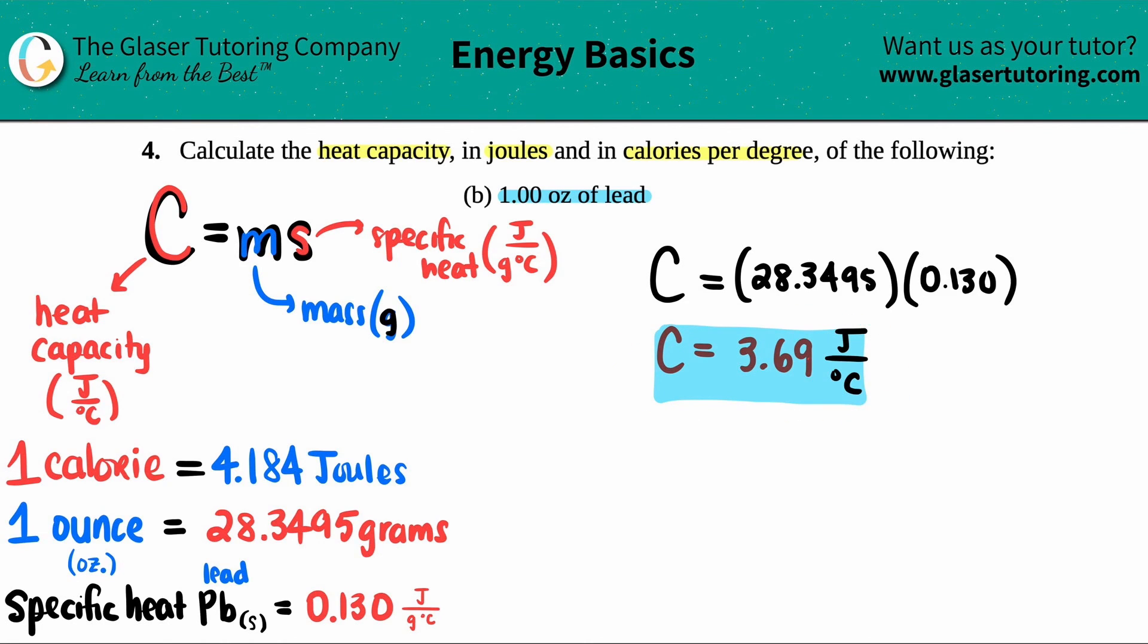Now I just have to convert this into calories. They gave us a lowercase calorie. Be careful—sometimes they might ask you to convert to capital Calorie. Capital C for calorie and lowercase c for calorie are two totally different things. Capital Calorie is actually a kilocalorie. We're not doing that. We're just converting to lowercase calorie, and that's the conversion I put here: one calorie equals 4.184 joules.